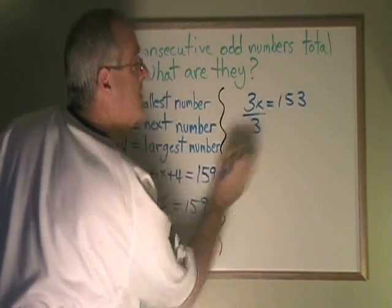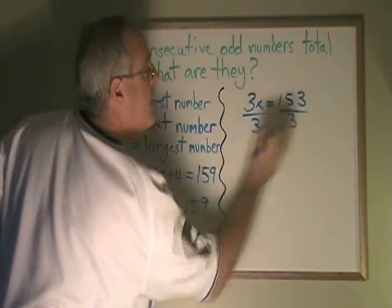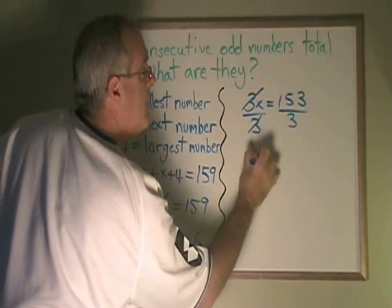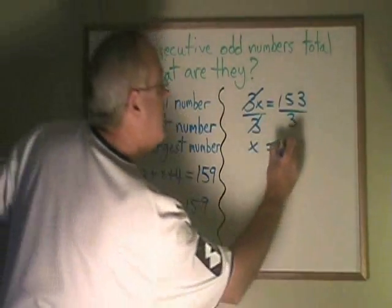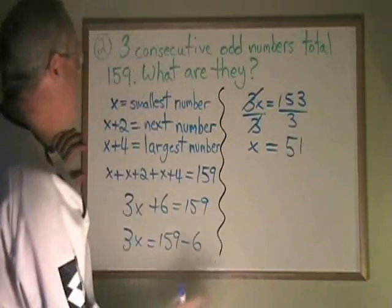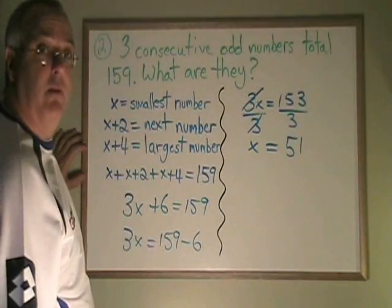If I divide both sides of my equation by 3, these 3's cancel. My x is isolated. And 153 divided by 3 is equal to 51. That means my smallest number is equal to 51.